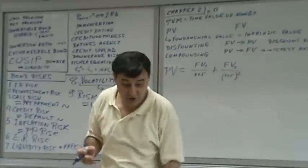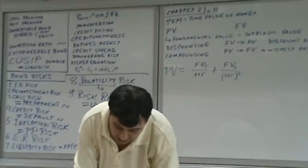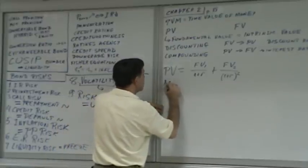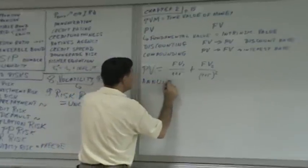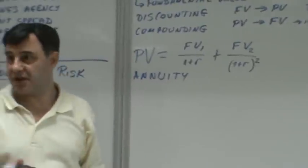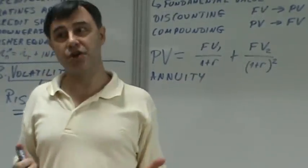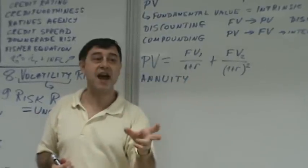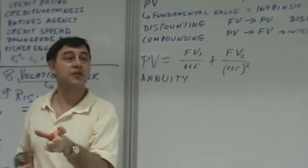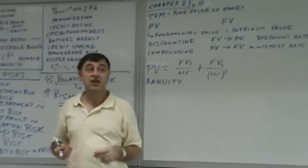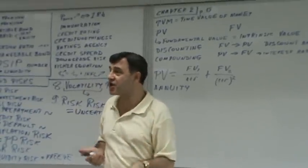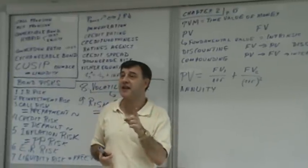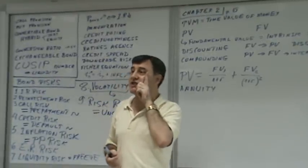The next concept is called annuity. Annuity simply means equal cash flows for each period. If it's annual cash flow, it means for each year there's going to be one cash flow of the same value — for example, 1,000, 1,000, 1,000 or 50, 50, 50, or 700, 700, 700.